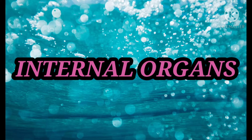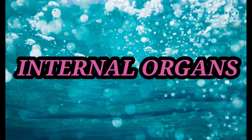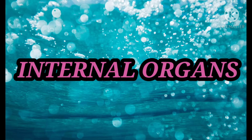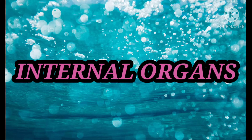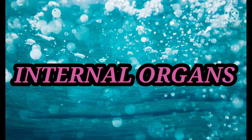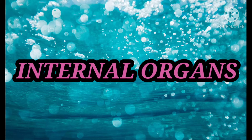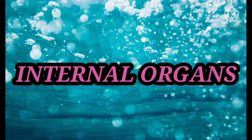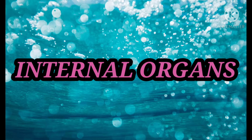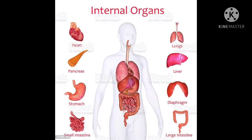What are internal organs? Internal organs are those which we cannot see. Our internal organs are brain, heart, lungs, kidneys, stomach, liver, etc.